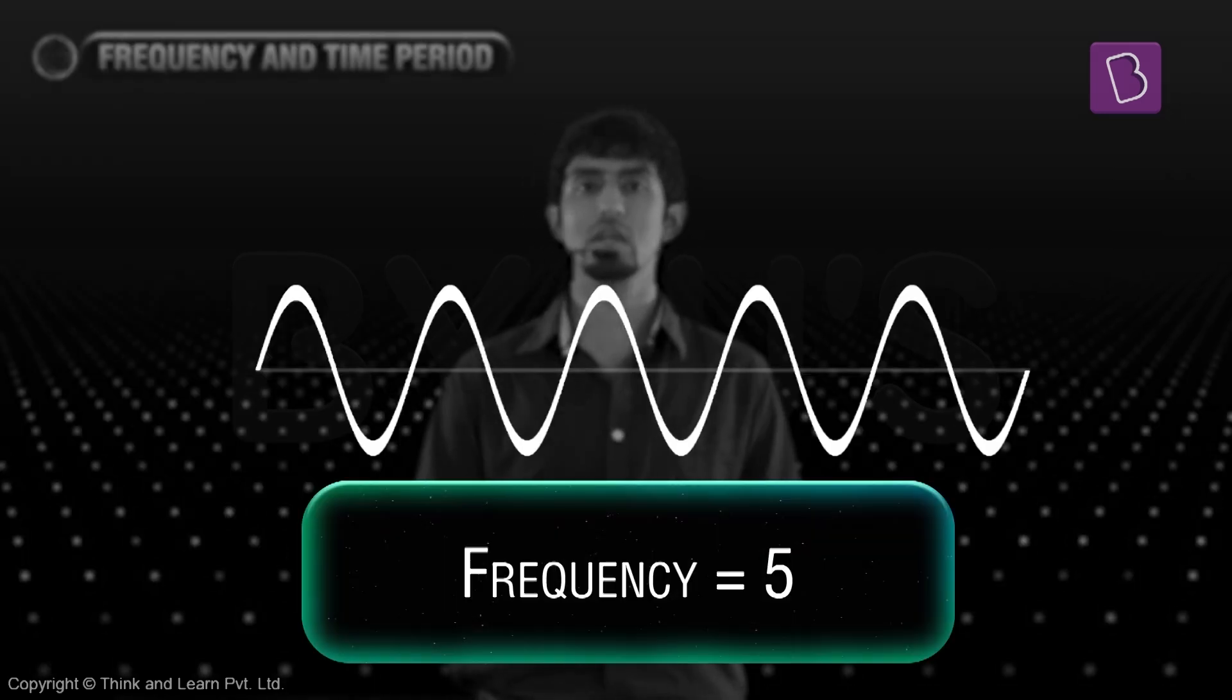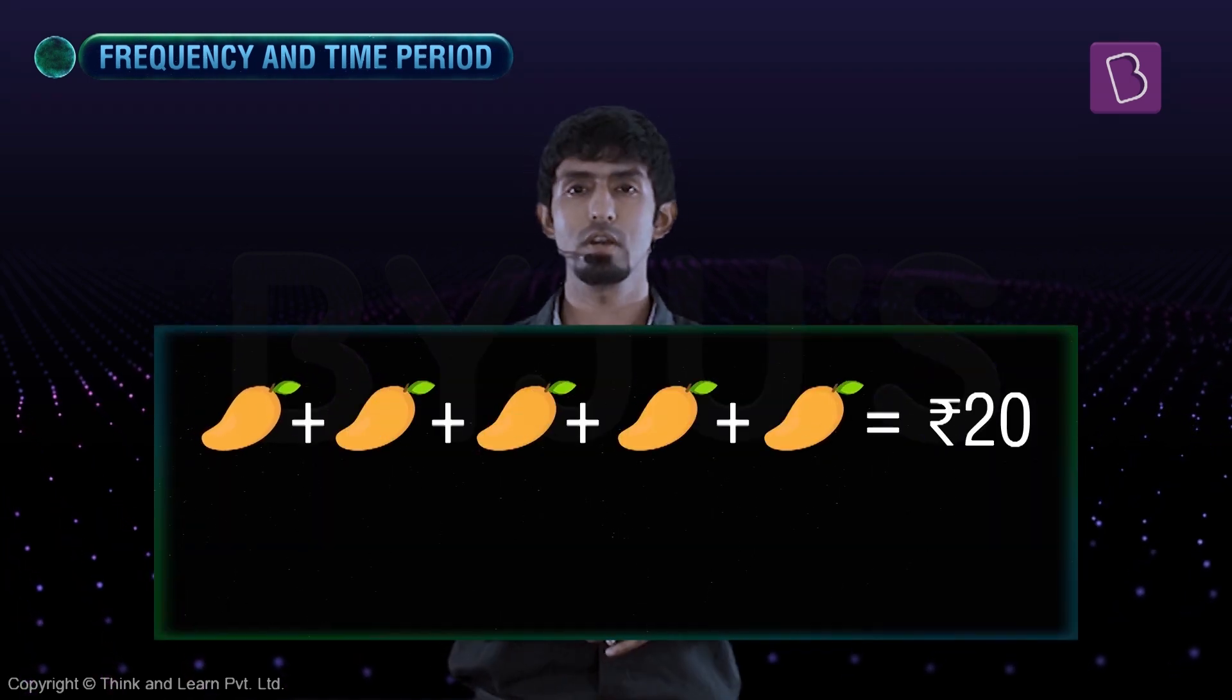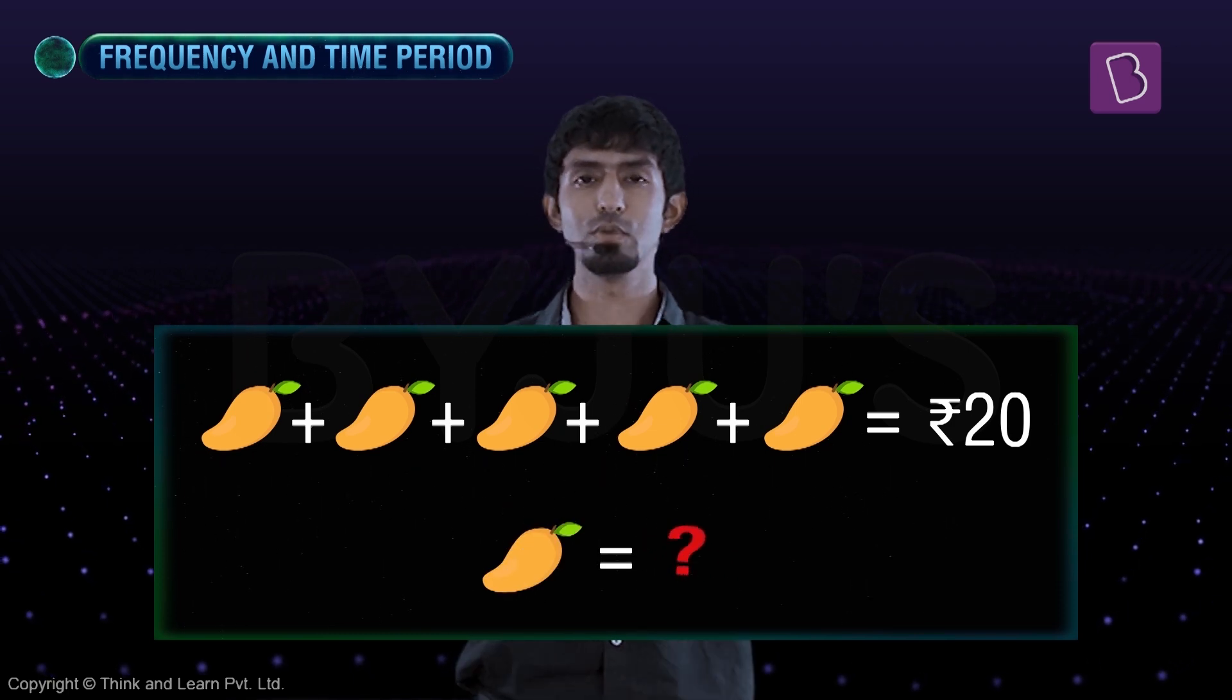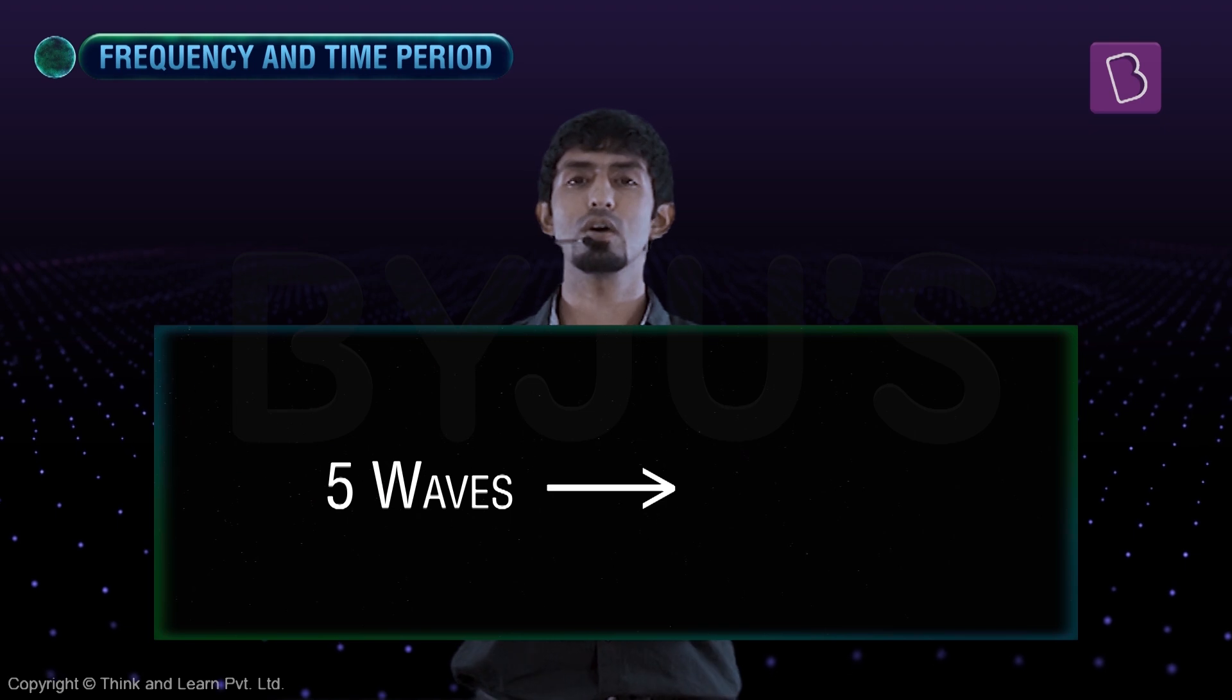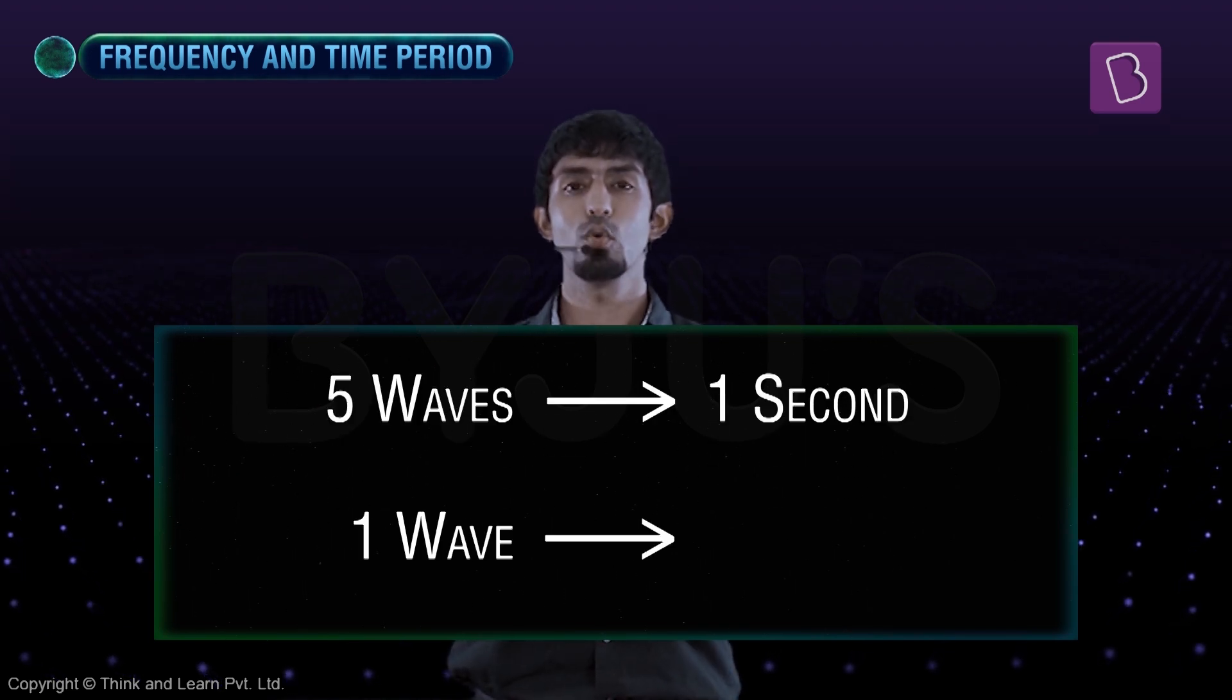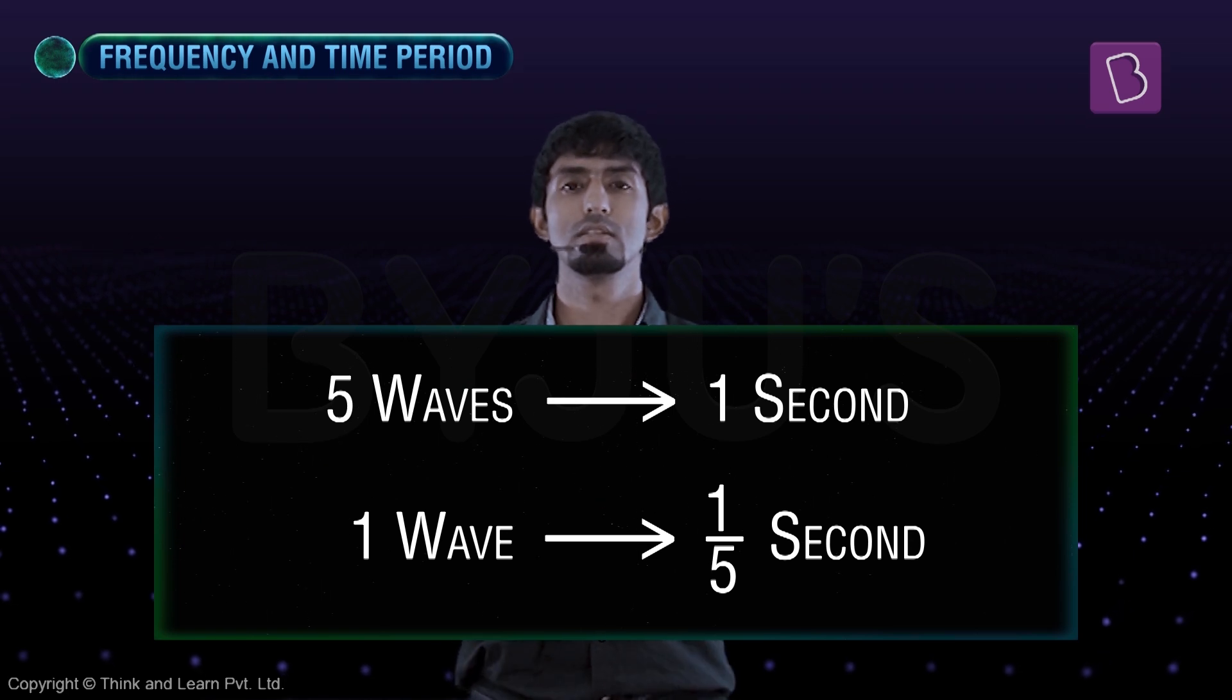Yeah, five in one second, therefore the frequency is five. But now if I were to ask you, what is the time period? In other words, how long does one wave take? This goes back to the old question, right? Five mangoes cost 20 rupees. How much does one mango cost you? You would do this pretty easily, wouldn't you? If five waves take one second, then one wave will take one-fifth of a second. That's exactly what it will take.